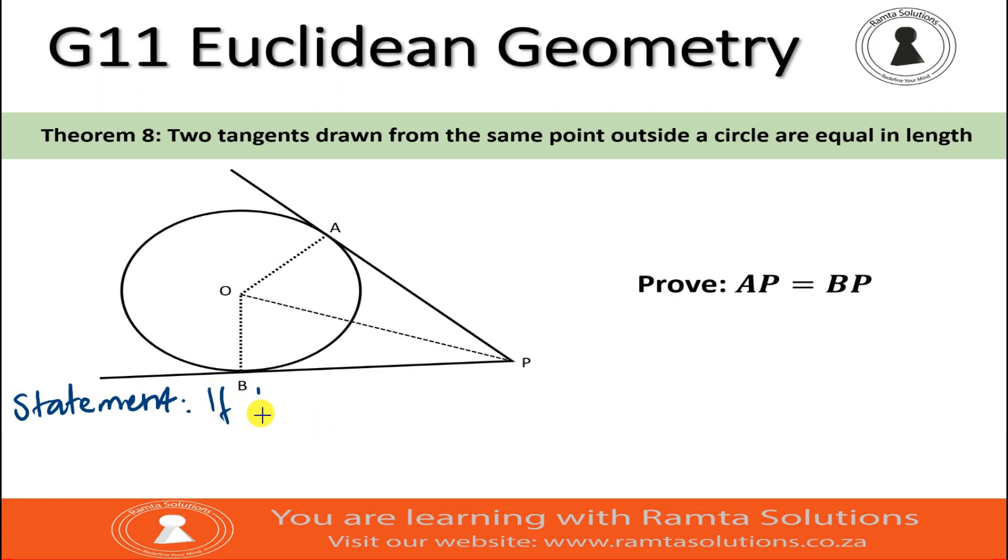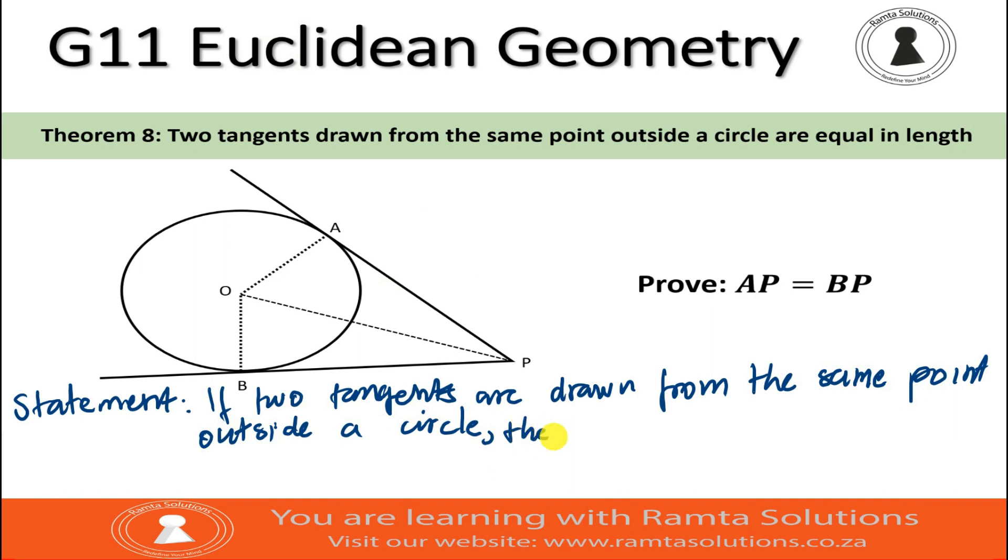I will repeat it. If two tangents are drawn from the same point outside a circle, then they are equal in length.